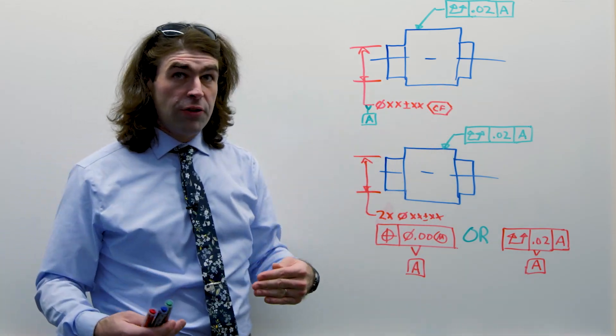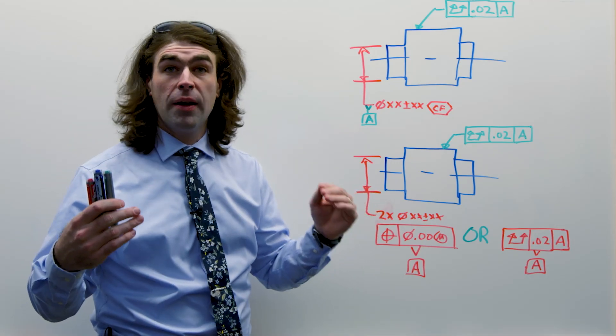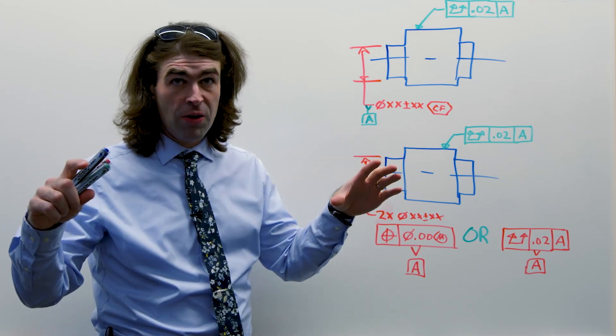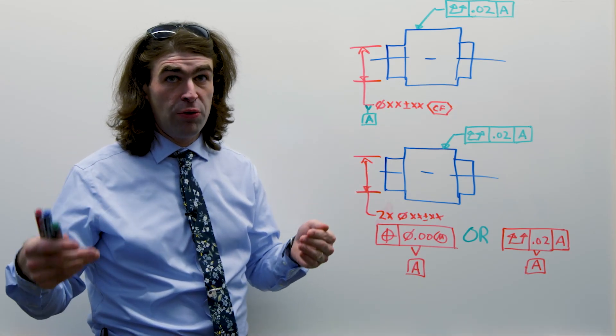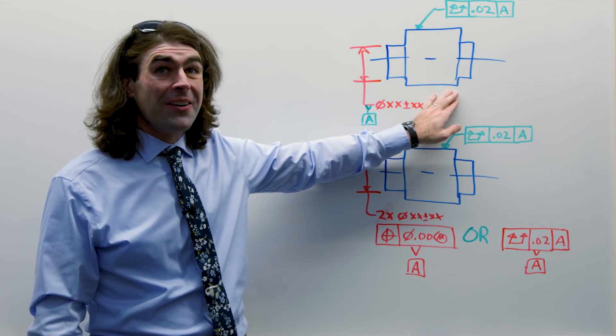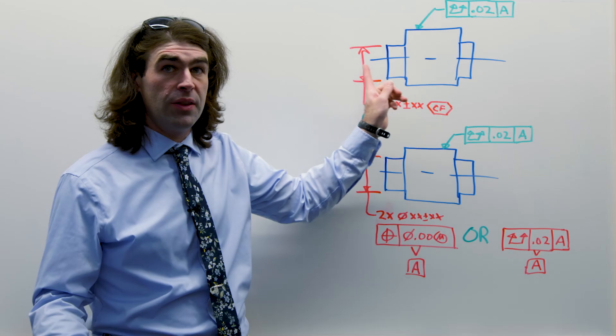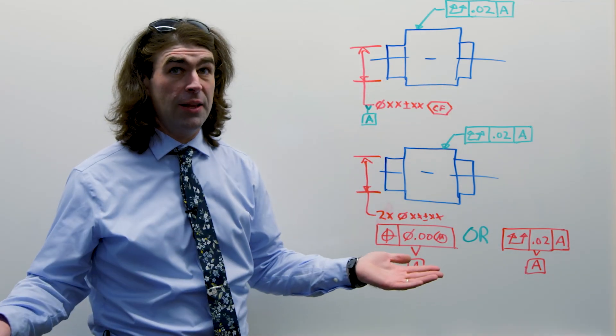With continuous feature, you're saying that's one feature. Rule number one applies all along the length, so it controls the coaxiality of those two diameters. Without continuous feature here, there is no control of the coaxiality of this little diameter to this little diameter. They could be anything.